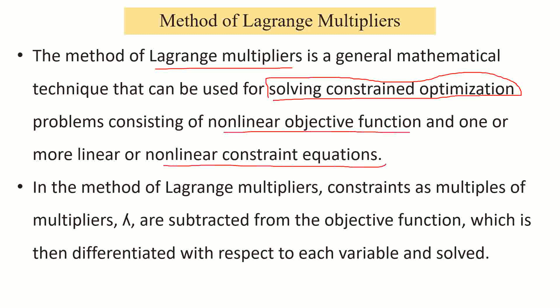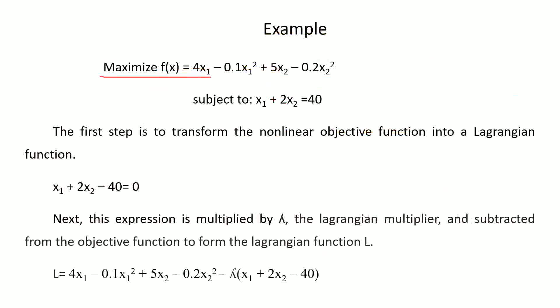In this method, there are some steps on how to solve using this particular technique. We will take one example and see how to solve using these steps. Let's take this example: maximize f(x) = 4x₁ − 0.1x₁² + 5x₂ − 0.2x₂².